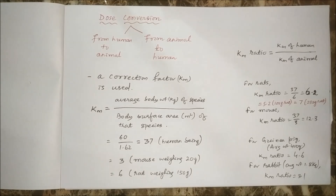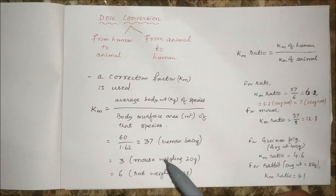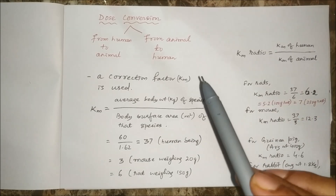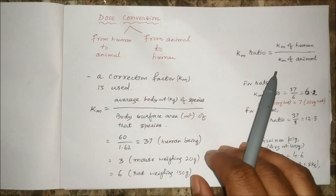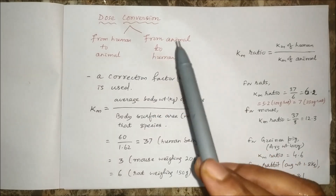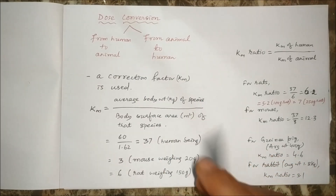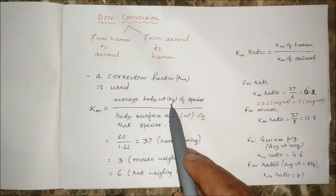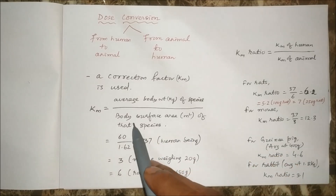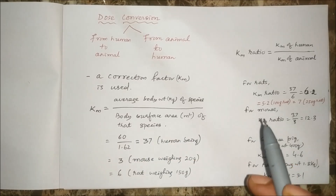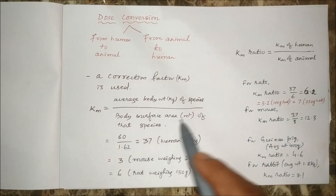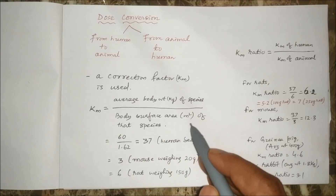Namaskar. Today we will study dose conversion — that means if we know the human dose, how to convert that human dose into animal equivalent dose, or if we know the animal dose, how to convert it into human equivalent dose. For such conversion, a correction factor KM is used, and KM is the ratio of average body weight in kg of a species to the body surface area in square meters of that species. For example, in human beings the average body weight is 60 kg and the body surface area is 1.62 square meters.